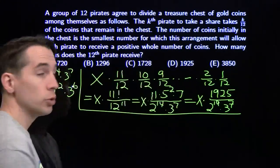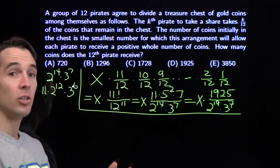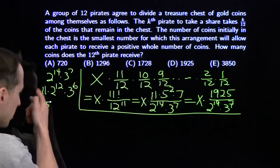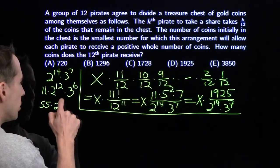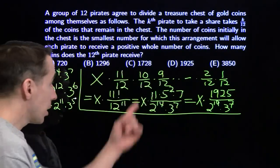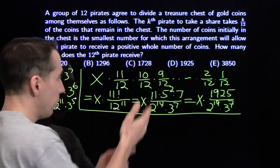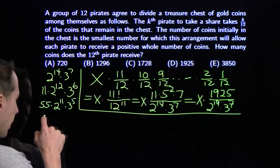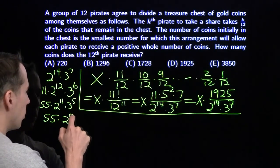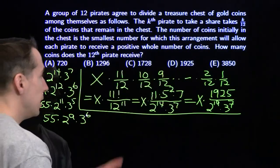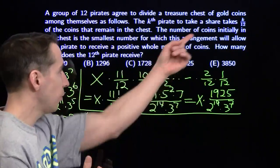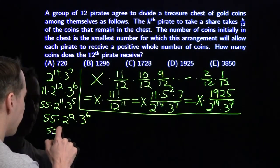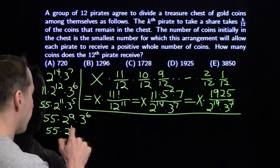The second pirate takes 2/12 (that's 1/6) and leaves 5/6 of this amount. Leaving 5/6 throws in a factor of 5 but removes a factor of 2 and a factor of 3. The third pirate takes 3/12 (1/4), leaves 3/4 — throwing another factor of 3 back in but removing 2 factors of 2. The fourth pirate takes 4/12 (1/3), leaves 2/3, removing a factor of 3 and adding back a factor of 2.